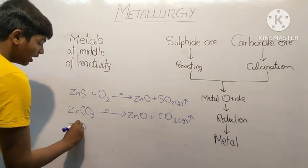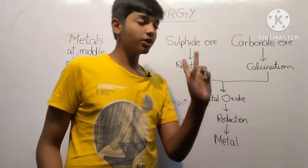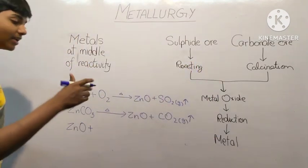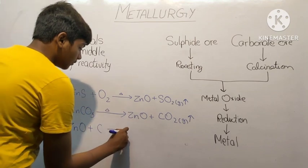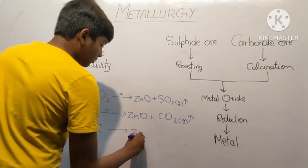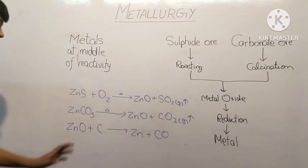On ZnO we could do two processes of reduction to obtain the metal. We can either use a good reducing agent such as carbon, from which we will get Zn plus CO, which is carbon monoxide.